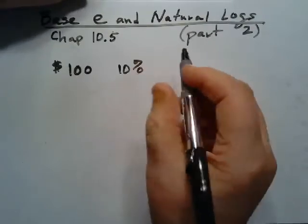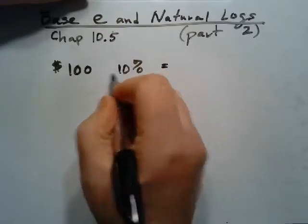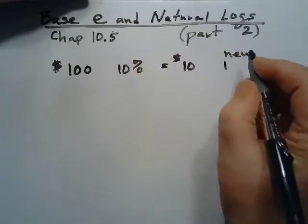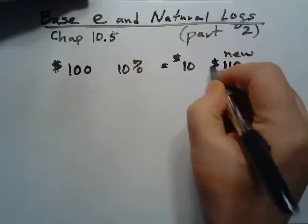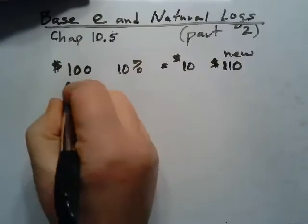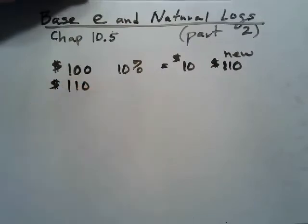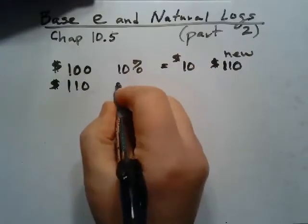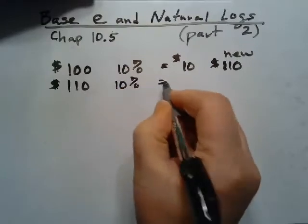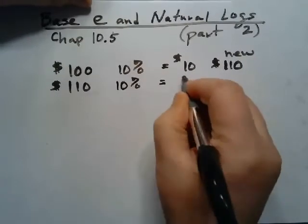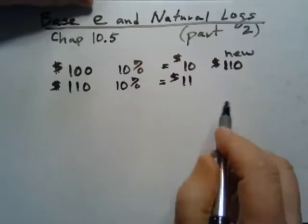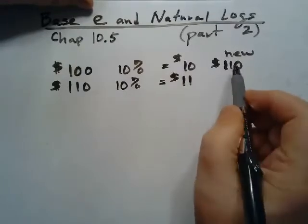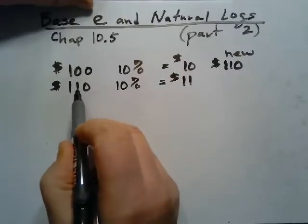One year from now your earnings would have been ten percent of a hundred dollars, or ten dollars, so your new balance would be the original hundred plus the interest — a hundred and ten dollars. If you let that money ride in your account for the next year, it starts out at a hundred and ten dollars, and again at ten percent interest, ten percent of a hundred and ten dollars is eleven dollars. You made a little more money this year. That's what happens when you compound: the money grows faster because the value you're earning interest on continues to increase.